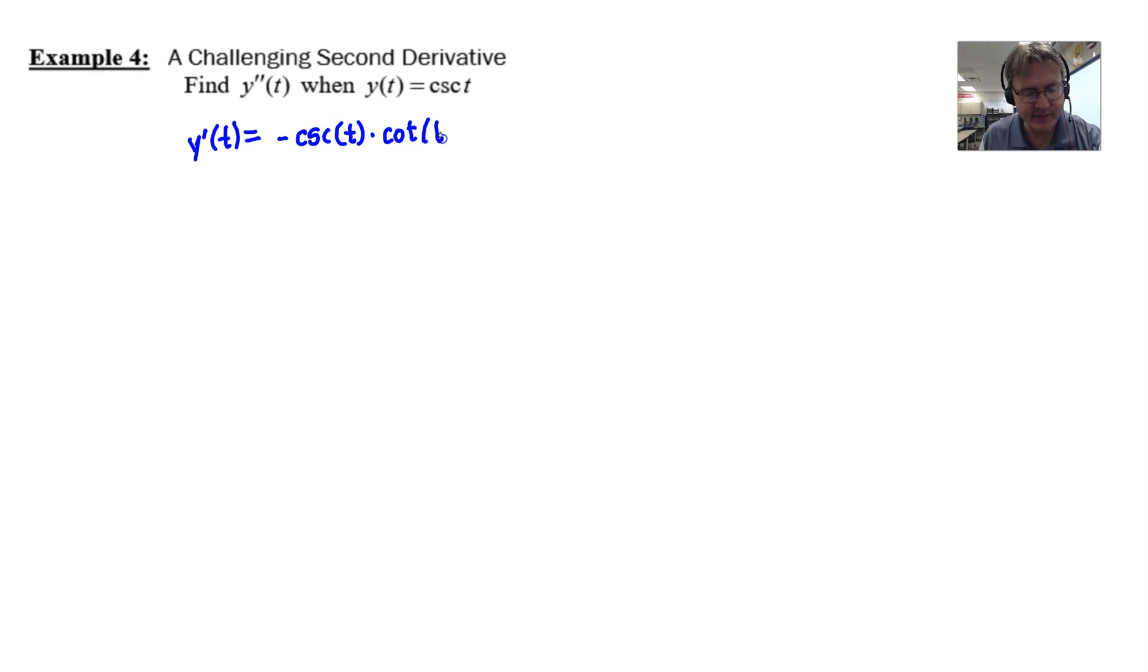So now we have this wonderful combination of two trig functions that are being multiplied together. So if we want to take the derivative of this, we have to now use the product rule. So we got ourselves sort of in a little bit of a rut here because we have a little bit more difficult process when we take the derivative the second time.